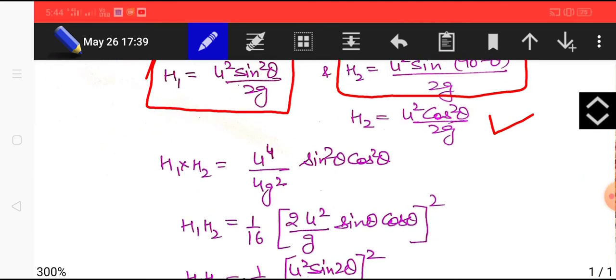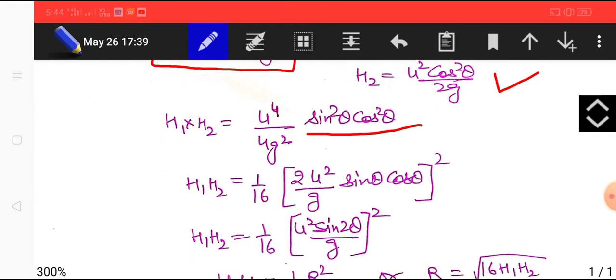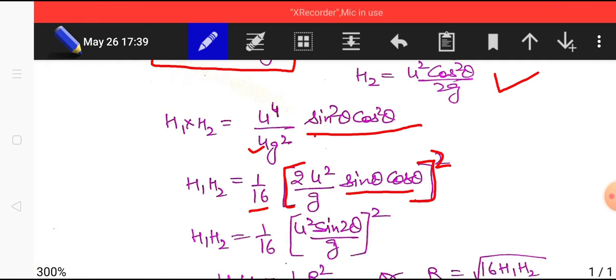Multiplying h1 and h2 together it will become u raised to power 4 divided by 4g square into sine squared theta cos squared theta. Now if I multiply numerator by 4 and divide numerator by 4 then this denominator 4 will become 16 and the 4 with which I multiplied in numerator I had taken the square root of it because I take the content in square bracket. So this sine squared theta cos squared theta can be written as sine theta cos theta.